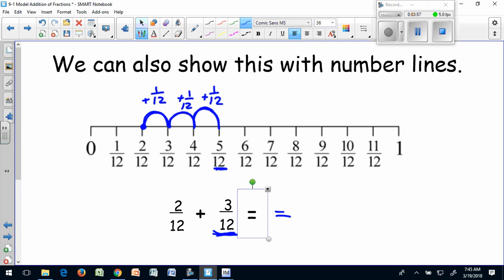Which tells me that two twelfths plus three twelfths equals five twelfths. Again, adding the numerators together, keeping my denominators the same.